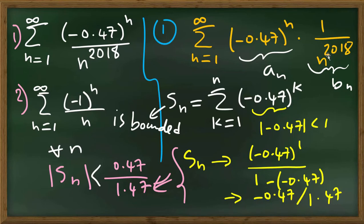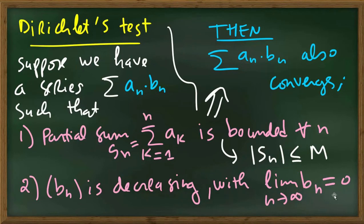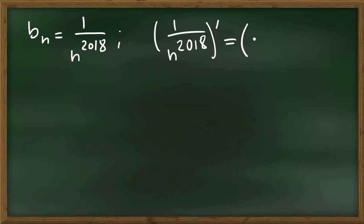B_n is 1 over n to the power 2018. Is it decreasing? Is the limit 0? It's the derivative of n^(-2018), which is minus 2018 times n^(-2019).